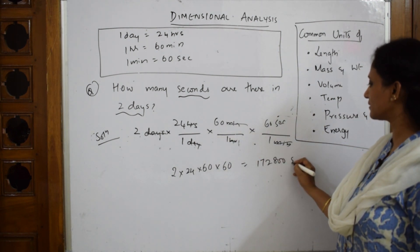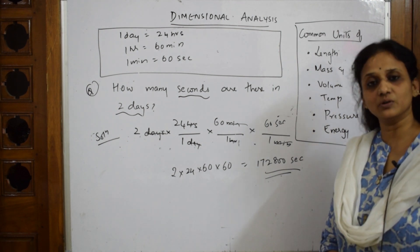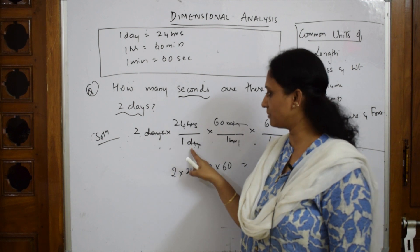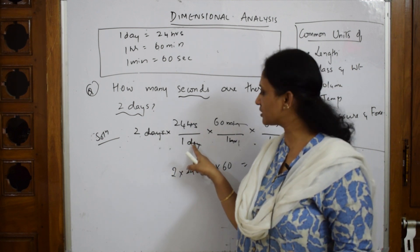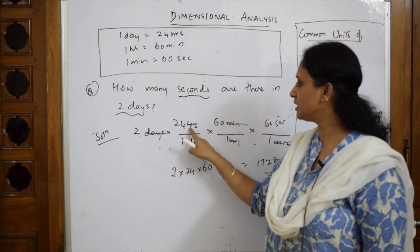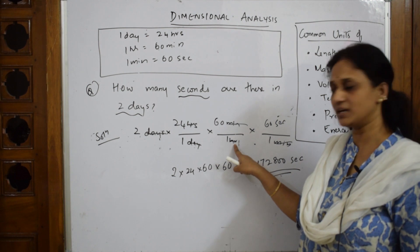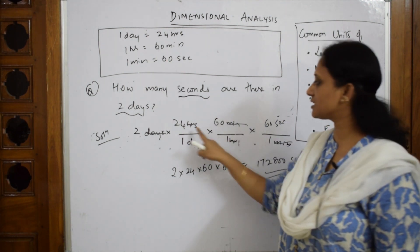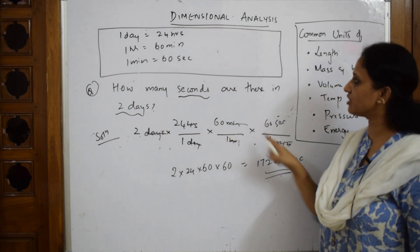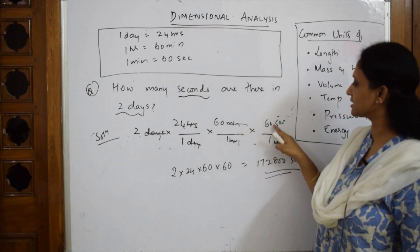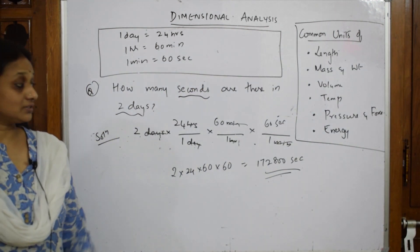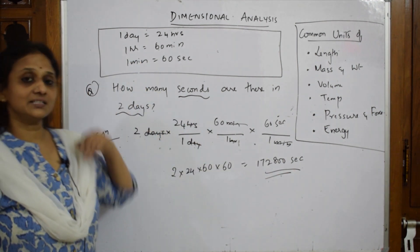Now multiply: 2 × 24 × 60 × 60, which comes to 172,800 seconds. The key steps: take the given quantity, cancel units step by step - days cancel, hours cancel, minutes cancel - and multiply to get the required answer in seconds, which is what the question asked for.